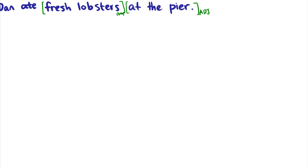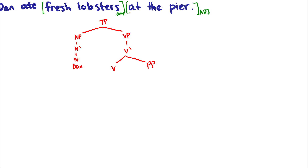So Dan ate. We have a tense phrase to start. Subjects are always specifiers of TPs. We don't have bar levels for T's yet, but we can separate them into noun phrases and verb phrases for the tense phrase. 'Dan' is just a proper name, so this is a noun phrase on its own. There's no specifier for the VP, but there is an adjunct, so we go down to the V-bar level and attach the prepositional phrase as daughter of a V-bar and sister of a V-bar. Then 'fresh lobsters' as a complement is daughter of a V-bar, sister of a V.